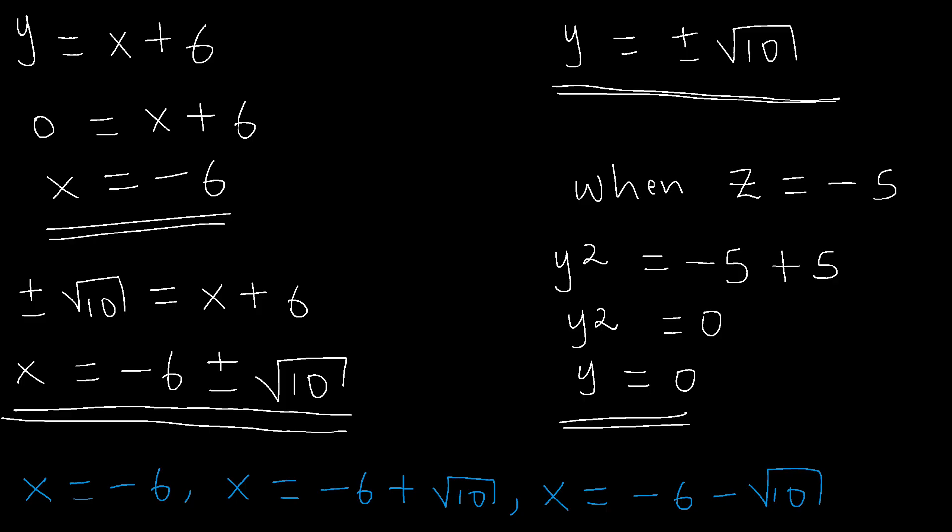Therefore, the values of x are: x equals minus 6, x equals minus 6 plus the square root of 10, and x equals minus 6 minus the square root of 10. That's how you can solve such an equation. If you have found this video helpful, don't forget to like it and subscribe to my channel. Thank you for watching, and have a nice day.